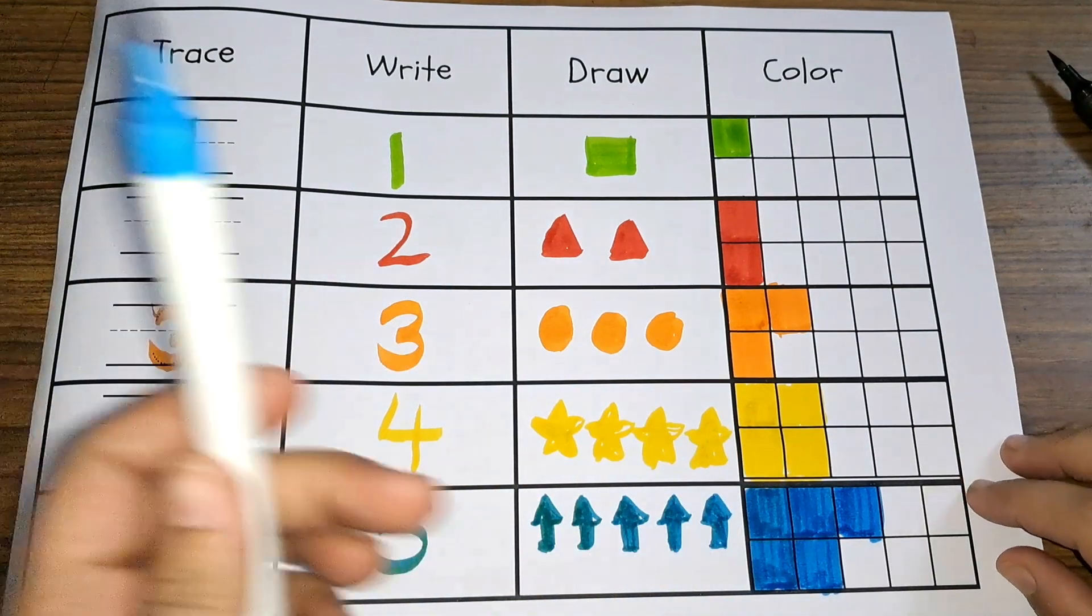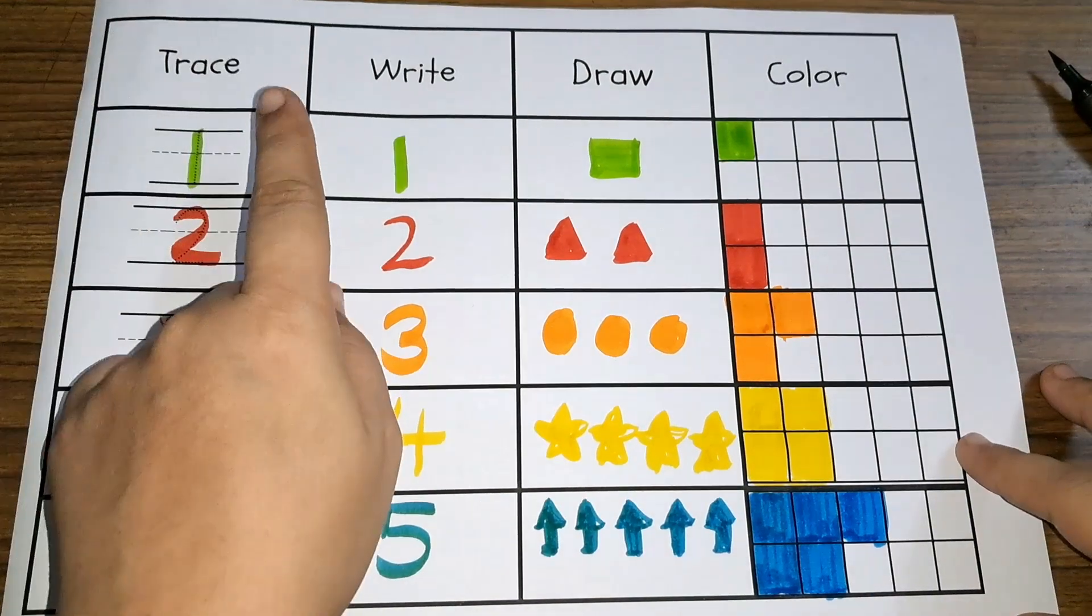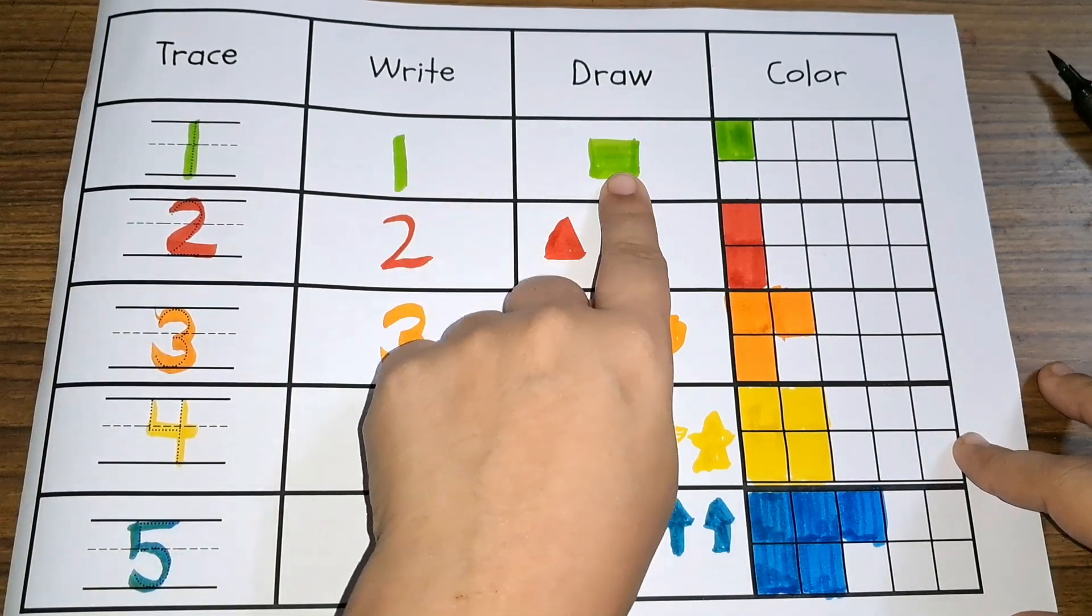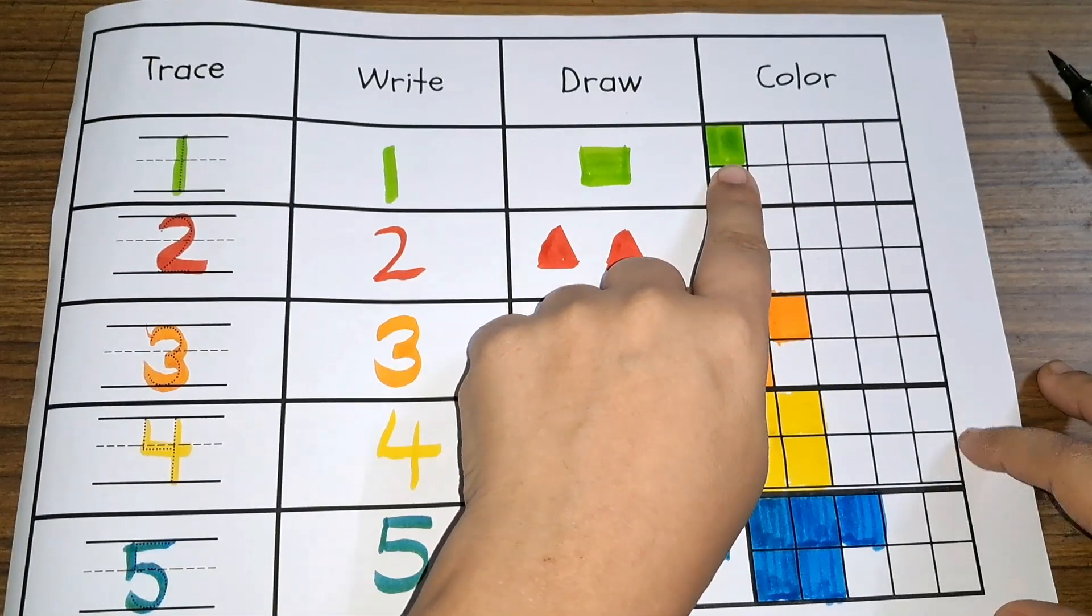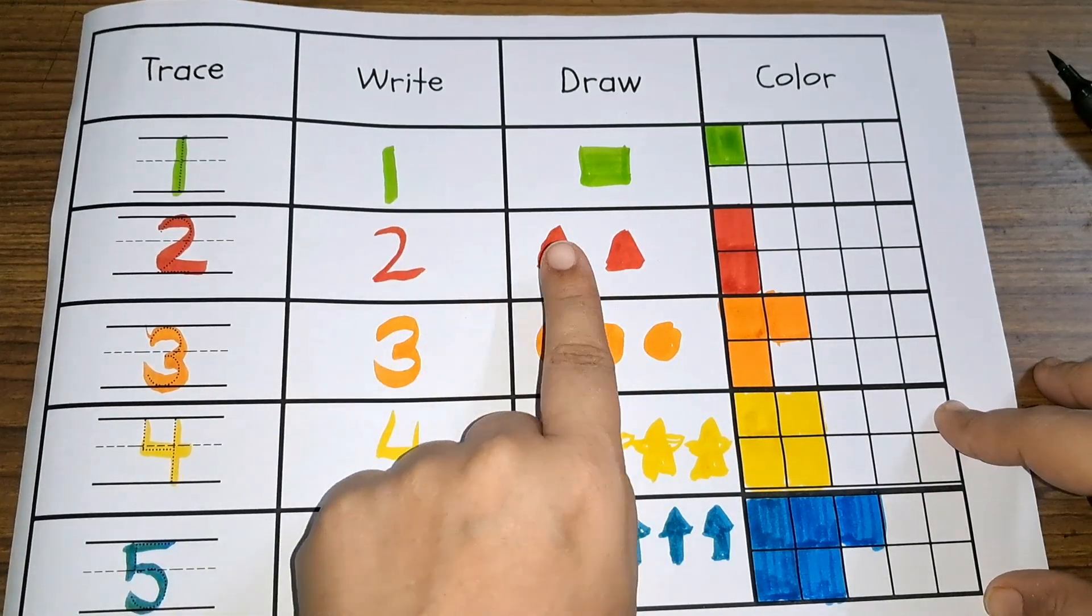Blue color. Let us see one more time. 1, 1, 1, 1 square, 1 green color. 2, 2, 2, 2 triangles, 2 red color.